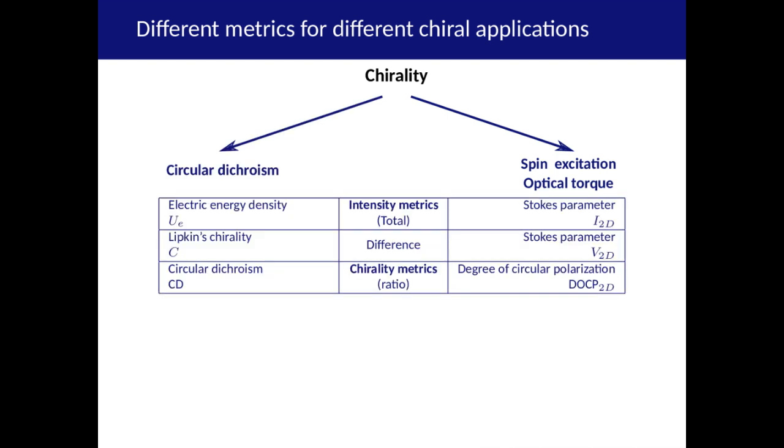So here we have two sets of electromagnetic metrics. The intensity metrics, which give us the total response, and the chirality metrics, which tell us how strong the difference between the left and right polarizations are compared to the intensity metrics. The goal of nanophotonic chiral enhancement is to boost these intensity metrics while making sure that the chirality metrics are not suppressed.